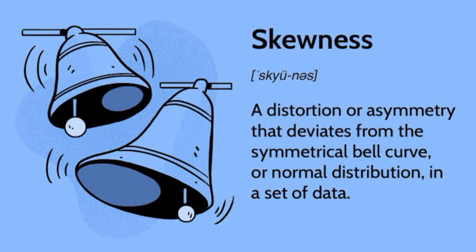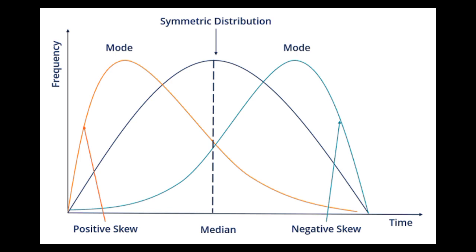Skewness is the measure of asymmetric distribution. Friends, when we see a distribution is asymmetrical, it's when its left and right sides are not mirror images.